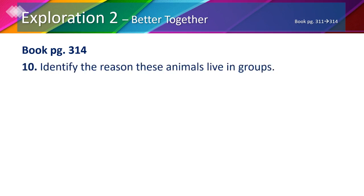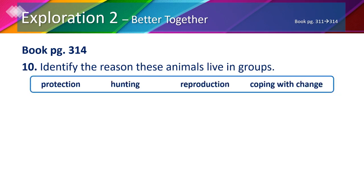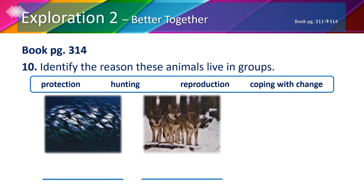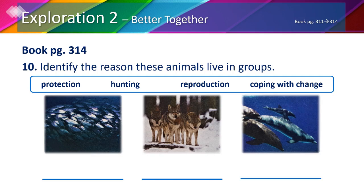On page 314 number 10, we're going to identify the reason these animals live in groups using the words: protection, hunting, reproduction, and coping with change. Fish swim in big groups to protect themselves against predators — that's protection. Wolves travel in packs and hunt better together — that's hunting. Dolphins work together to raise their young, giving better chances of reproducing and raising offspring — that's reproduction.